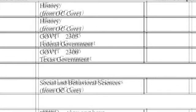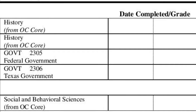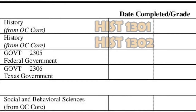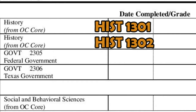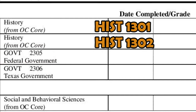The next section consists of the History and Government Requirements. You will need to take History 1301, History 1302, Government 2305, and Government 2306.